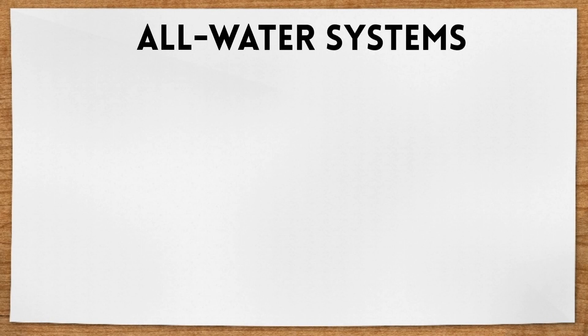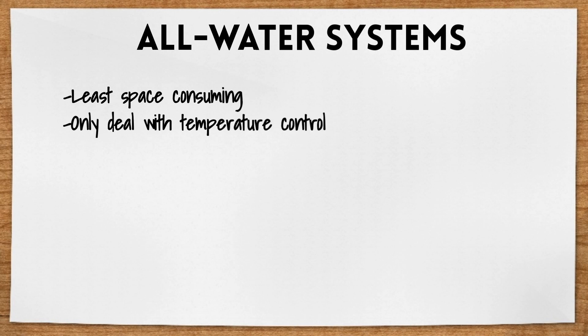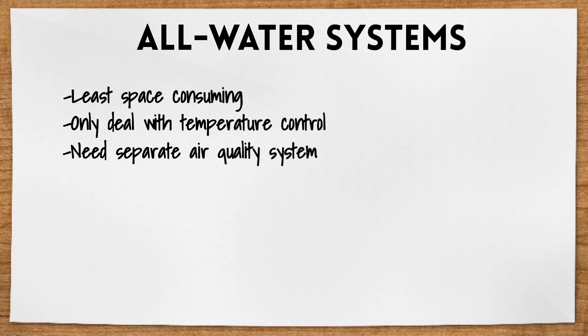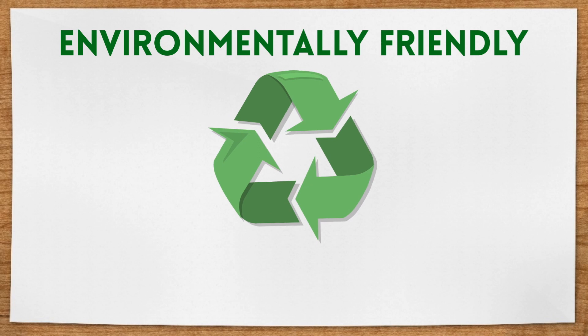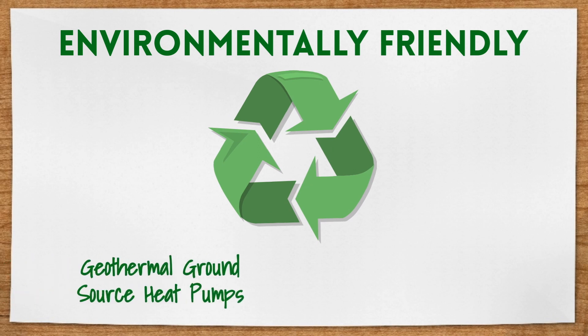The third category is all water systems. These are the least space consuming systems since their distribution trees are made entirely of thinner piping. However, they typically can only deal with temperature control, and air quality must be dealt with using a different system. The most common example of all water systems is the fan coil unit. There are also some environmentally friendly systems to know, such as geothermal ground source heat pumps and the concept of the economizer cycle.